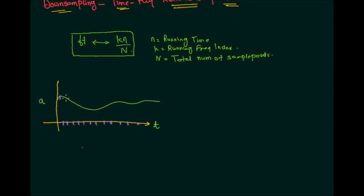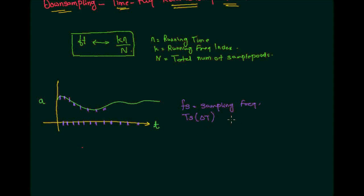I'm going to pick up samples at these intervals from the analog signal. The rule by which I pick up samples is given by the sampling frequency Fs. We also refer to the sampling time as Ts or delta t, and Ts is nothing else but the sampling time. They are inversely related: Fs is the inverse of Ts.